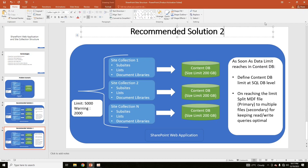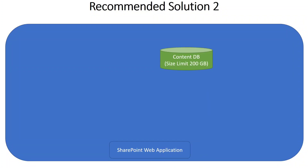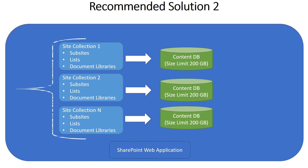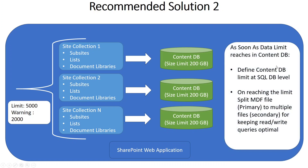Now moving to Recommended Solution 2. Here you are also creating multiple content databases and directing one site collection per content database. The difference is that as soon as the data limit is reached, the limit is defined at the SQL database level. This solution is executed at the database level by your database administrator, who will define the content database limit — the MDF file limits — at the SQL DB level. On reaching that limit, the MDF primary file will be split into secondary files, each occupying a defined data limit of 200 GB, 300 GB, or 500 GB.